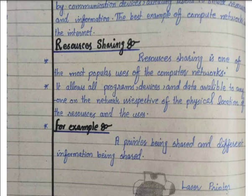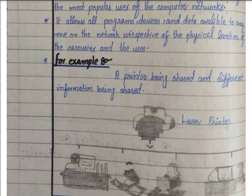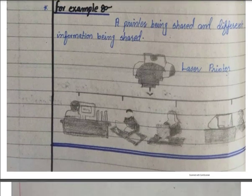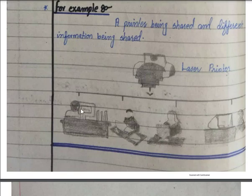Here is an example: you can see a laser printer that is shared among four users. Suppose one user is sitting here, there is a second user, a third user, and a fourth user. All four users are sharing the laser printer — that is an example of resource sharing.